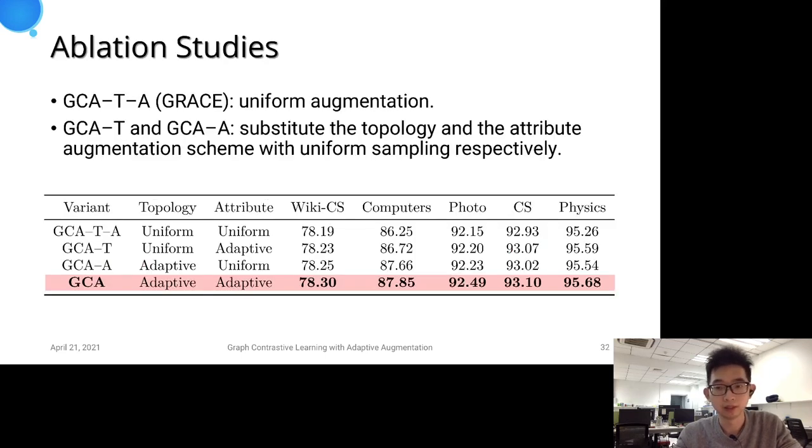We also conduct ablation studies on the adaptive augmentation module. We replace the topology and attribute augmentation function with a uniform sampling function, respectively, and the results are shown in this table.